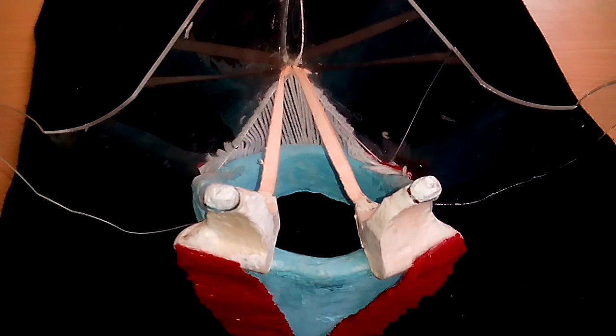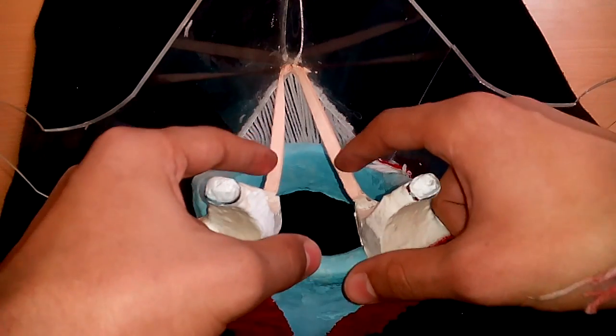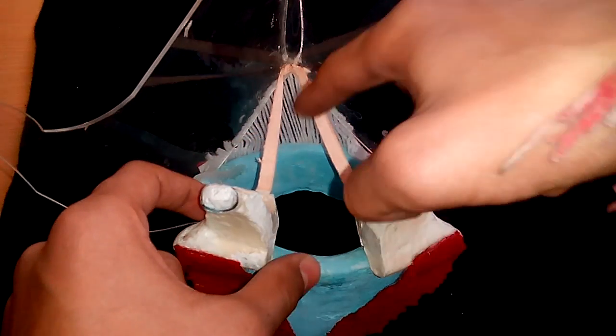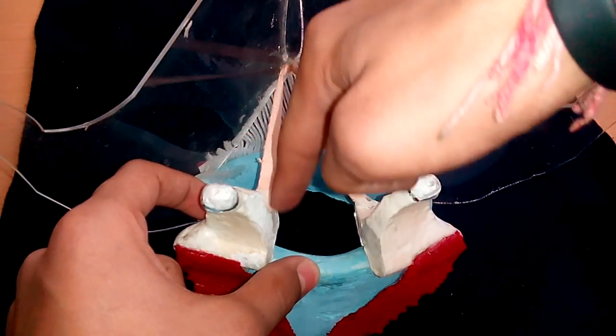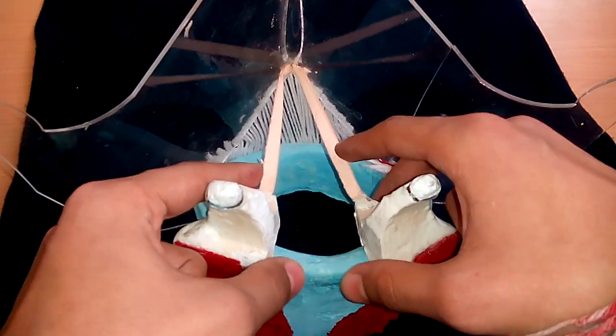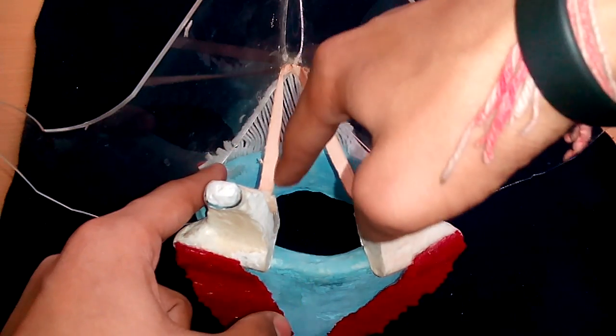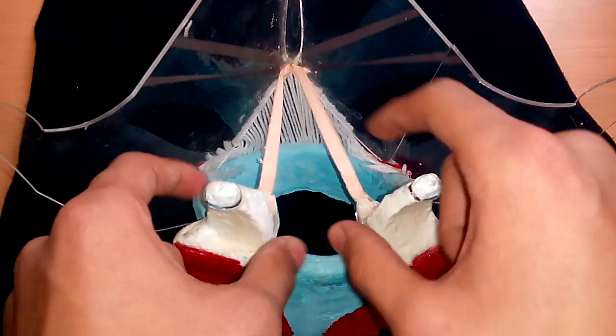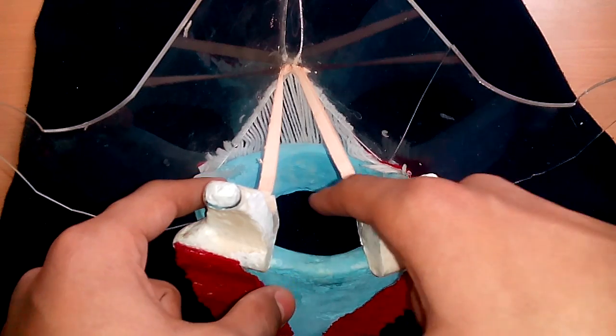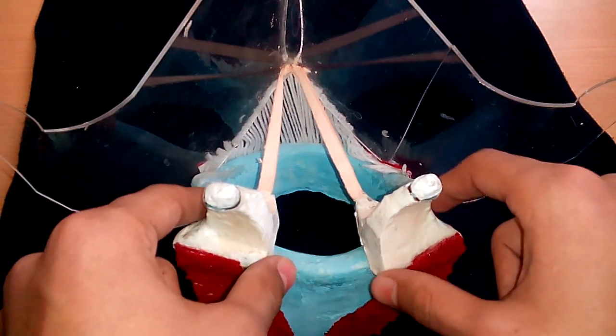Before moving to movements of vocal cord, let us see what is Rema glottidis. Rema glottidis is the cavity between vocal folds and arytenoids. These are vocal folds, these are arytenoids, and the cavity between them is Rema glottidis. It has an anterior membranous part between vocal folds and posterior cartilaginous part between two arytenoid cartilages.